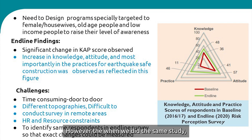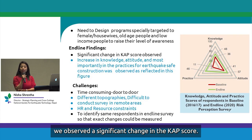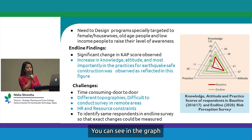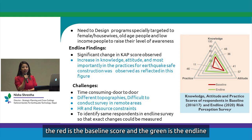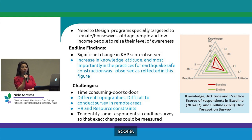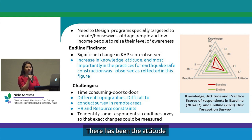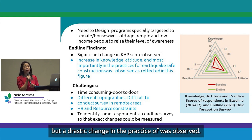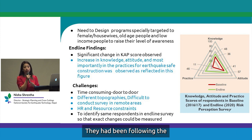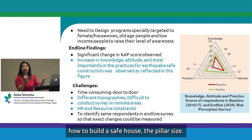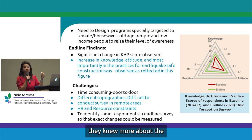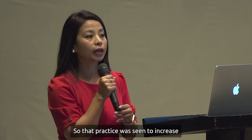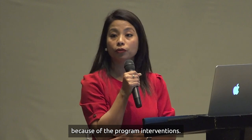However, when we did the endline survey using the same questions, we observed a significant change in the KAP score. The graph shows the red as baseline and green as endline. There was increased awareness. Attitudes, which were already positive at baseline, remained similar. But a drastic change in practice was observed — communities had been following building code practices, knowing more about pillar size and beam size to build a strong house, and were implementing those practices.